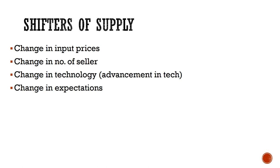The third determinant is advancement in technology. Technology is used to turn inputs into final products. Any innovation in machinery enables firms to hire fewer workers, produce in less time, or utilize fewer resources — this saves your cost of production. Whenever there is an advancement in technology, you always supply more.